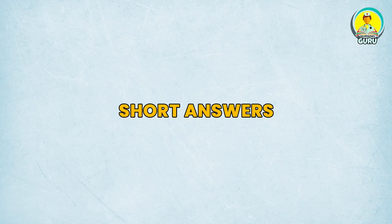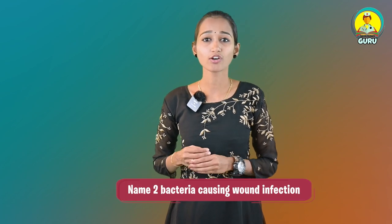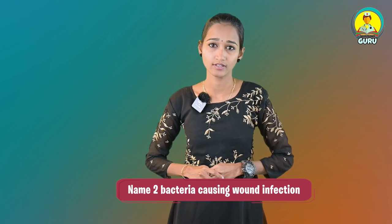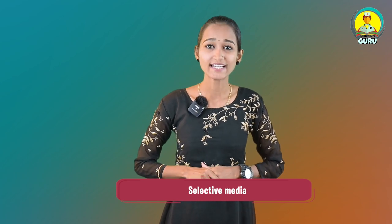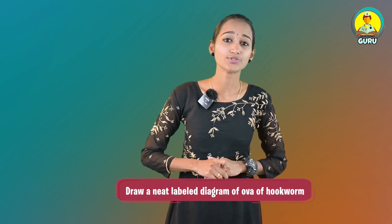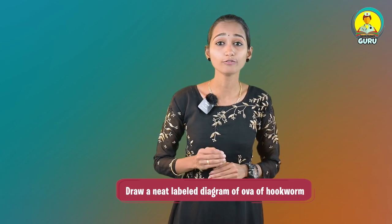Now we will move to the next section: short answers. That is the last section of questions. On that, you will get questions like: first question, name two bacteria causing wound infection. Second question, Weil-Felix test. Third question, herd immunity. Fourth question, Koch's postulates. Fifth question, selective media. Sixth question, draw a neat labeled diagram of ova of hookworm.